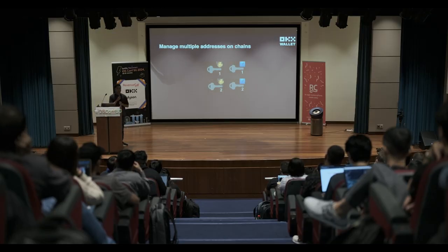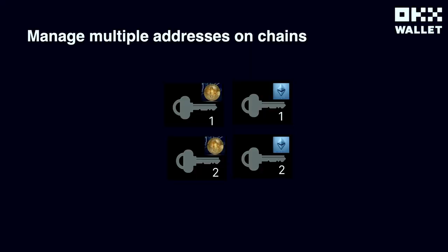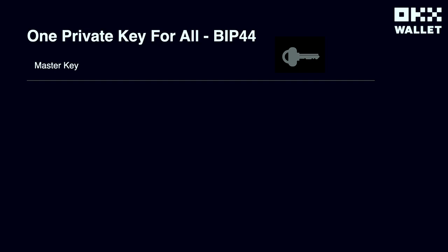Before generating addresses on the chain, we face another challenge: how to manage multiple addresses. For example, if I need to generate two addresses on the Bitcoin chain and two on Ethereum, that means four private keys to manage — which is very hard and not user-friendly. But what we can do is use only one private key and derive child private keys from it. To create child private keys we need to follow a defined path; otherwise different wallet software would be inconsistent.